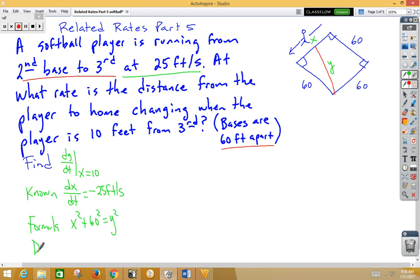Well, the next step is to do the derivative. So let's go ahead and do the derivative of that. Remember, it's implicit differentiation. So x squared becomes 2x dx/dt. 60 squared becomes 0. And y squared becomes 2y dy/dt.